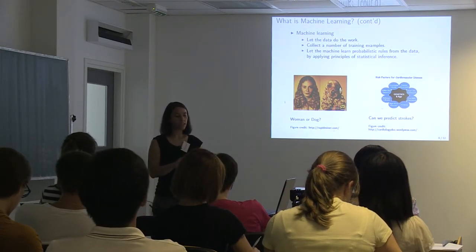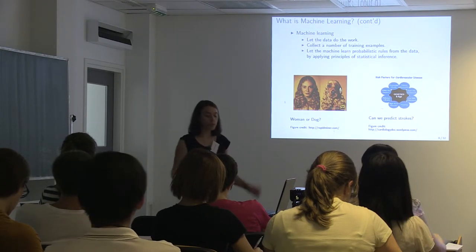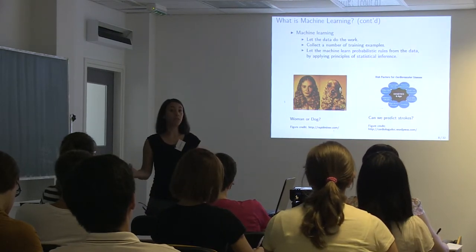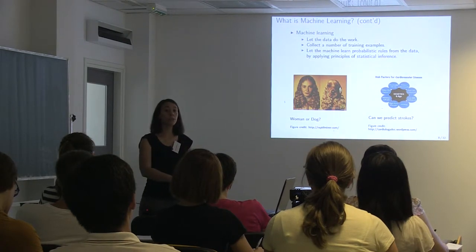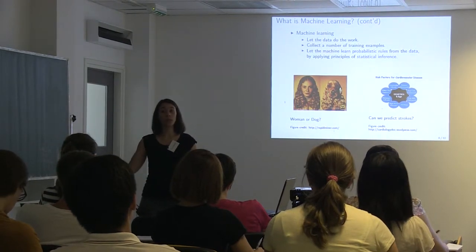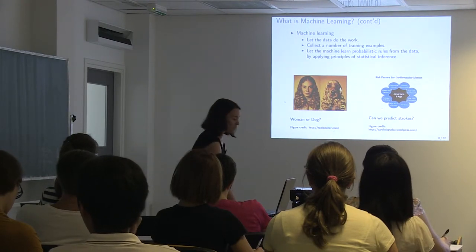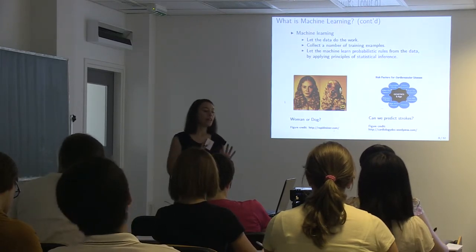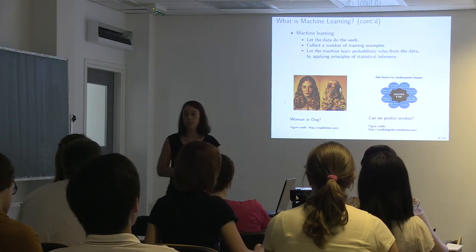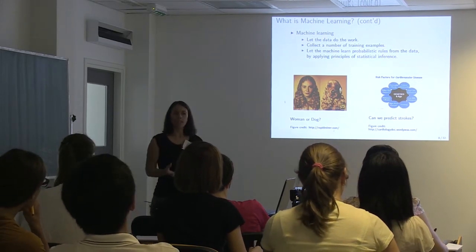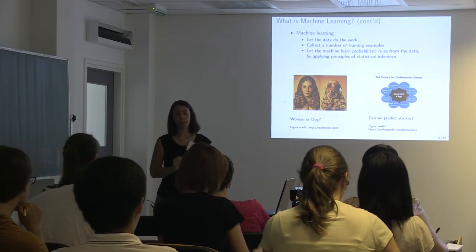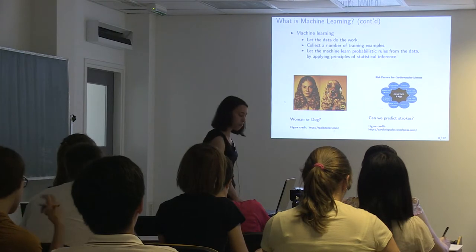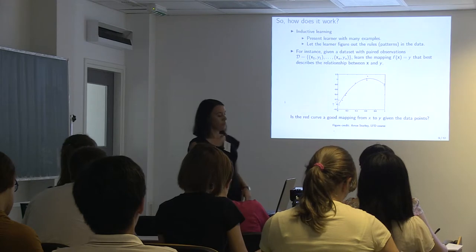The concept of machine learning is: let the data do the work. We have many examples — people labeled as a woman or a dog — and we give them to the machine and tell it to learn a rule that can classify and distinguish people from dogs. We collect training examples, build probabilistic rules from the data, and ask what is the probability of a new point belonging to a given class.